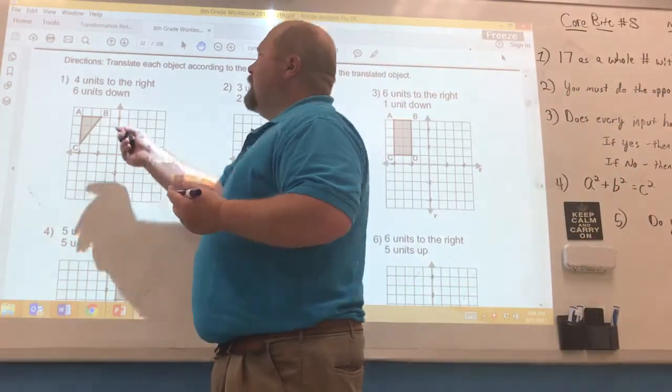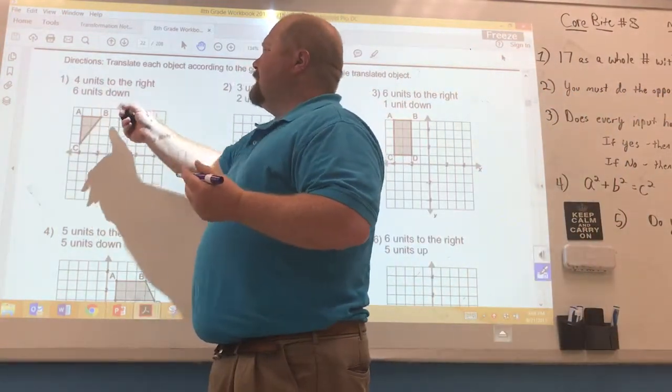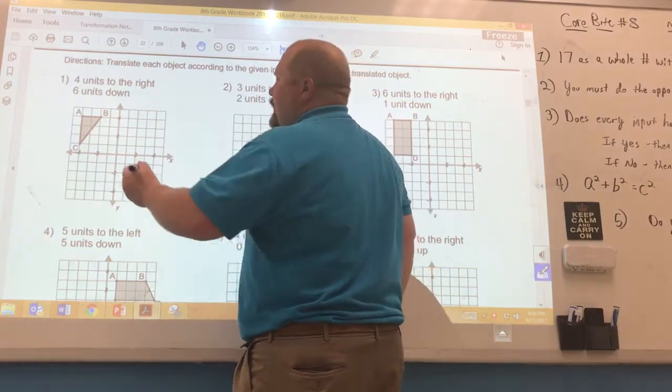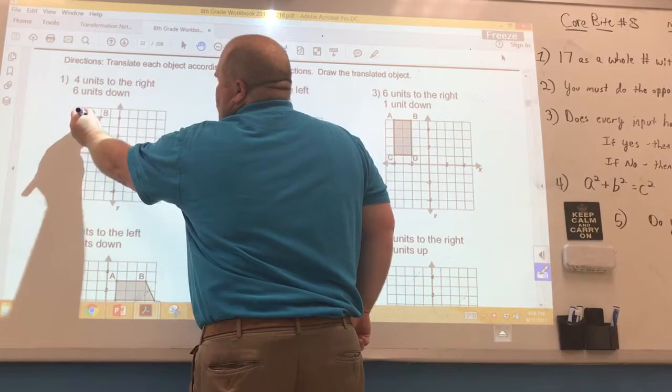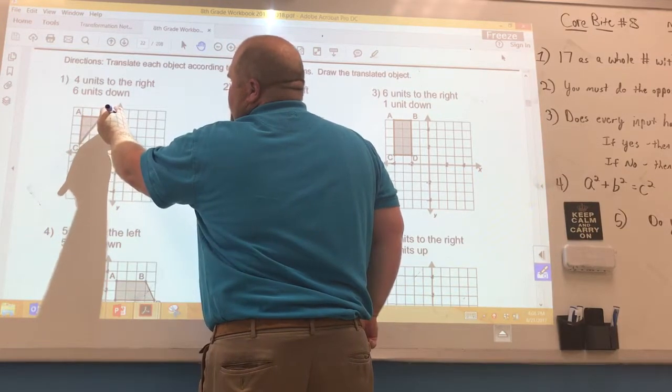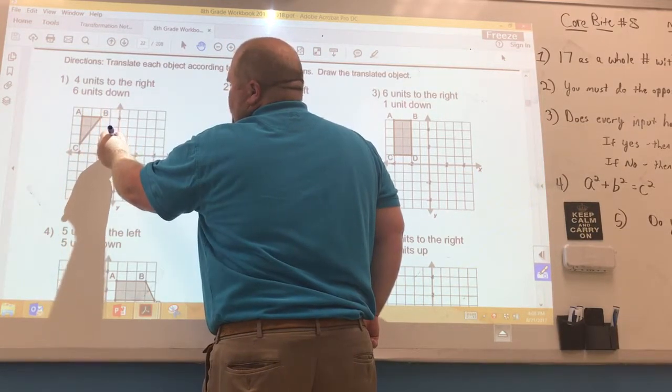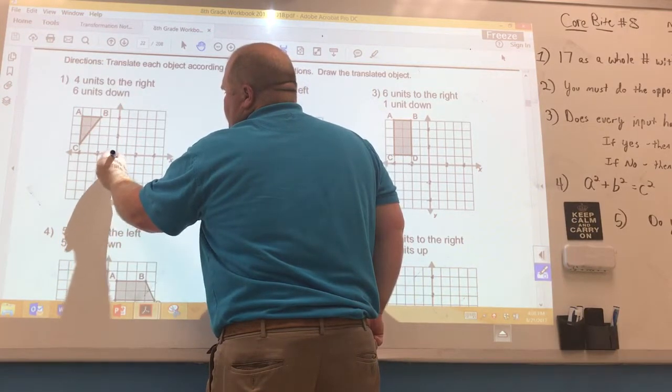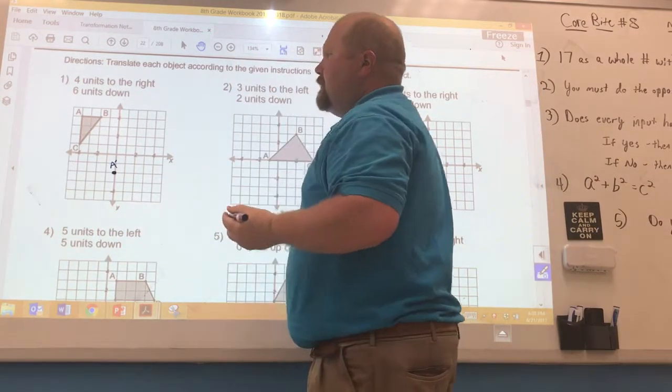So on number one, if you needed to go four units to the right and six units down, you would do that one point at a time. For instance, take point A and go four units to the right, one, two, three, four, six units down, one, two, three, four, five, six. Put your dot and label that A prime because it's the new image, it's the prime image.